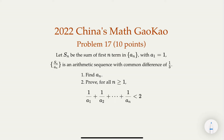We are given Sn over An, which is an arithmetic sequence with common difference of one-third. For the original series, we try to find out what An is, where Sn is the sum of the first n terms. The two parts of the question are: first, find An; second, prove the inequality that the sum is less than two. Pause the video and think if you can solve it.